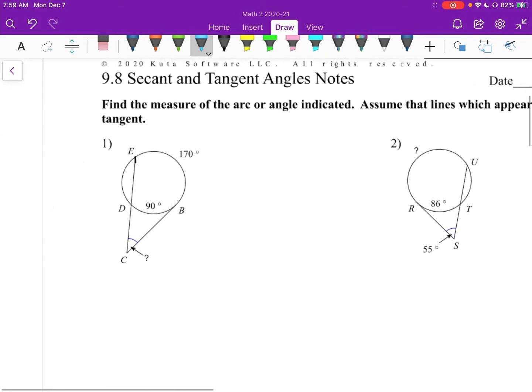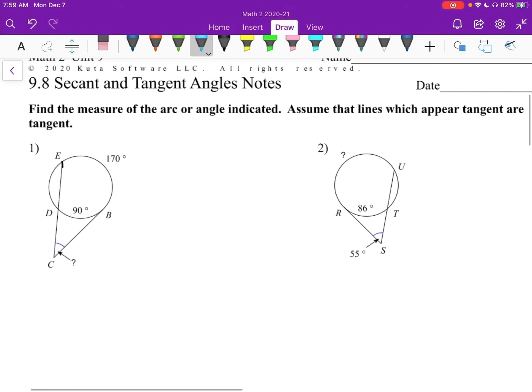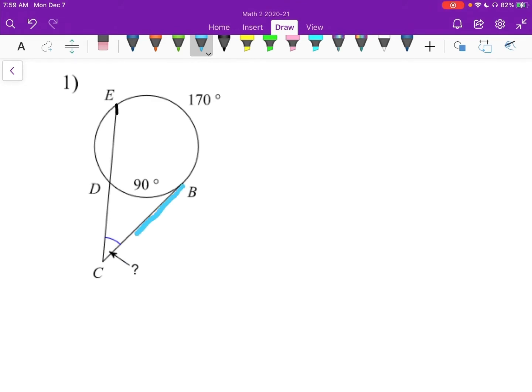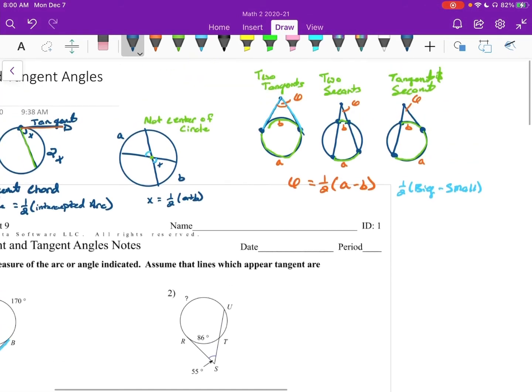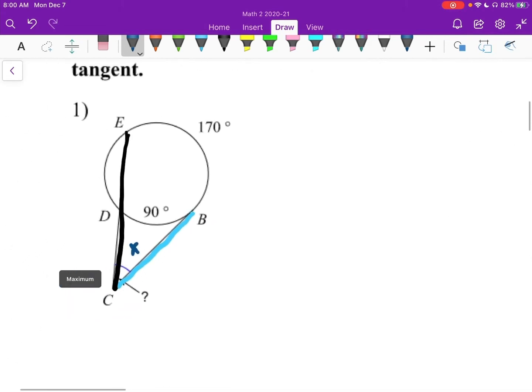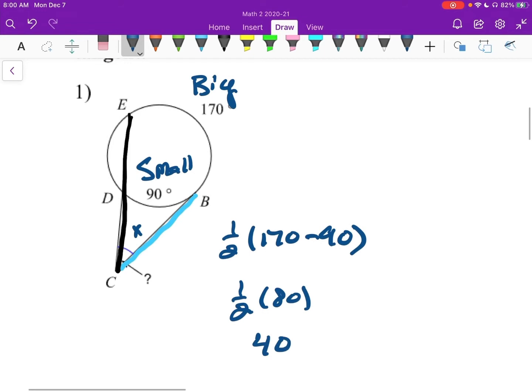Diving into number 1. Assume that the lines that look to be tangent are tangent. Okay. So we'll say that this guy is tangent. And then this guy would be a secant. I already said that. So we've got our angle here. We're going to have to use one of the formulas, one of the three formulas on the right side. This is going to fall into the last one there, the tangent and secant. So this is the big and this is the small. So it's going to be one half, 170 minus 90. One half times 80, which is 40 degrees.